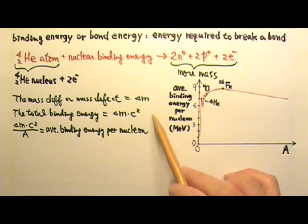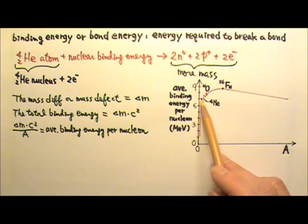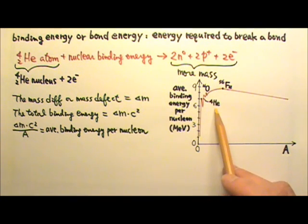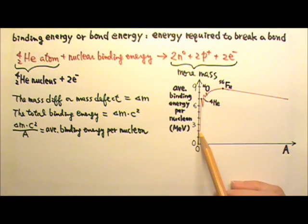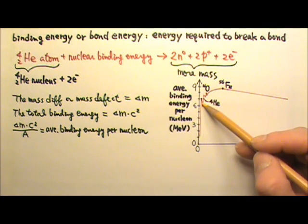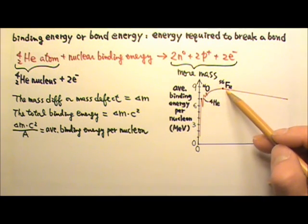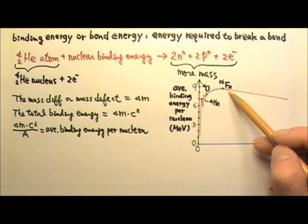For example, this is a graph of average binding energy per nucleon versus the number of nucleons. The first peak over here is helium-4-2. This part tells us that nuclei smaller than helium-4-2 are very unstable. And in general, as the nucleus gets bigger, it gets more stable until it reaches iron-56. Iron-56 has the highest average binding energy per nucleon, so it is the most stable nucleus. That's why there is a lot of iron-56 in the universe.